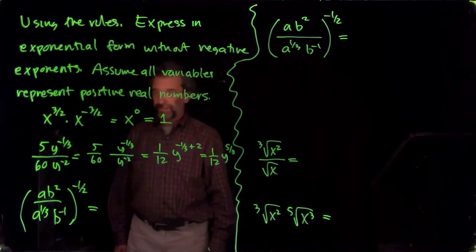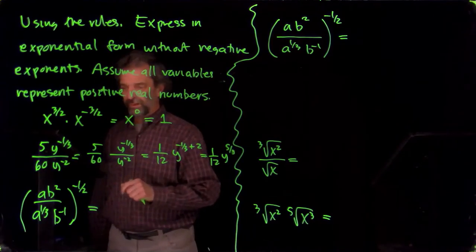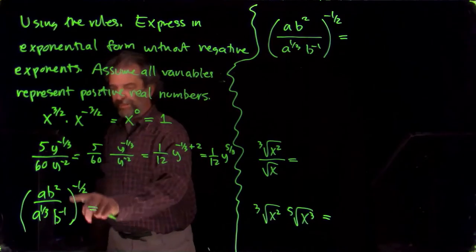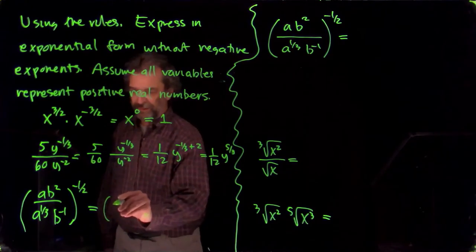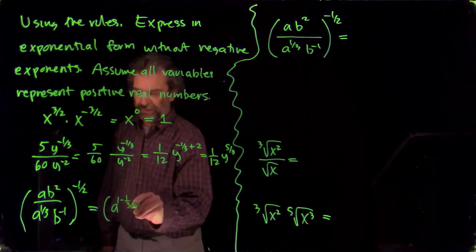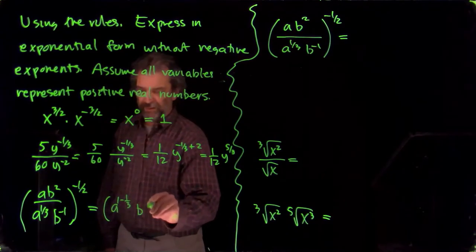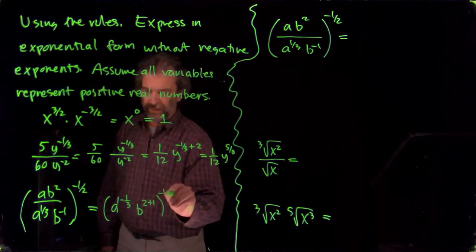And then here we have a more complicated thing, this fraction raised to some kind of negative exponent. One way to handle this is to simplify the inside first, see what that looks like. So that will be a to the one minus one-third, b to the two plus one to the minus one-half, like that.